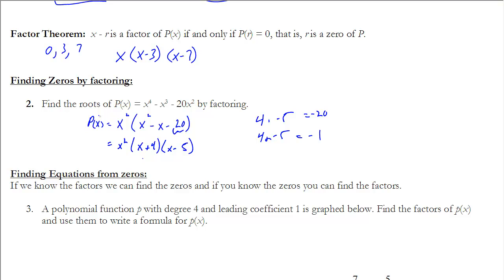We now have the polynomial in factored form. Finding the zeros is straightforward: x² = 0 gives x = 0, (x + 4) = 0 gives x = -4, and (x - 5) = 0 gives x = 5. So the zeros are x = 0, x = -4, and x = 5.